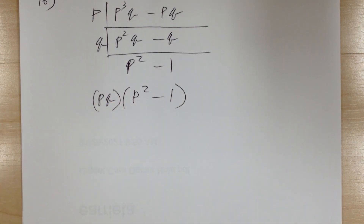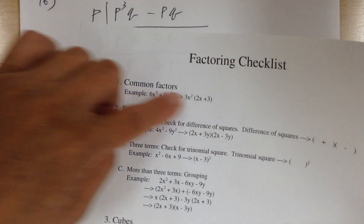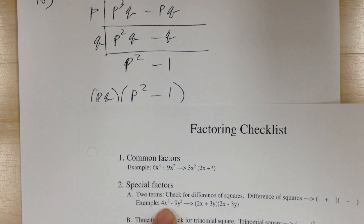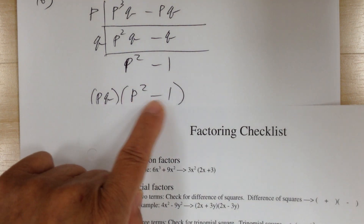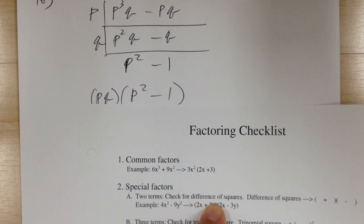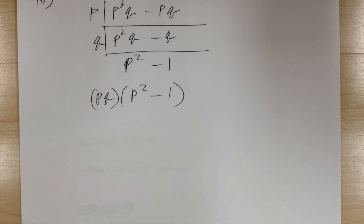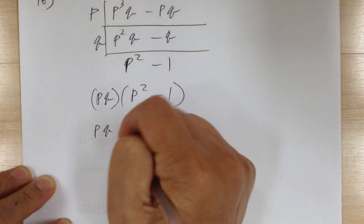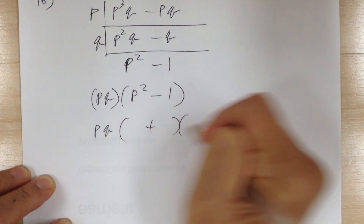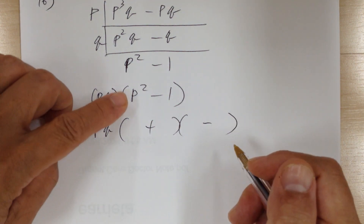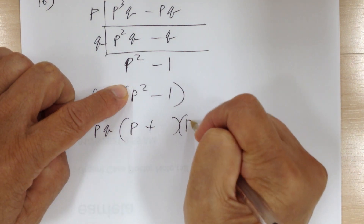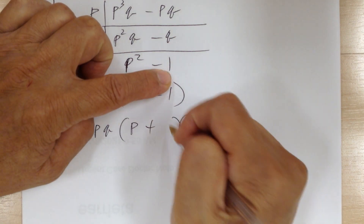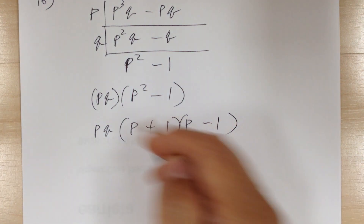Follow through with your step 1 result. The conjugate of p² - 1 breaks down as: p × p gives p², plus times minus gives minus, 1 × 1 gives 1. So p² - 1 = (p + 1)(p - 1). The full factored form is pq(p + 1)(p - 1). That's your step 1 and step 2a.